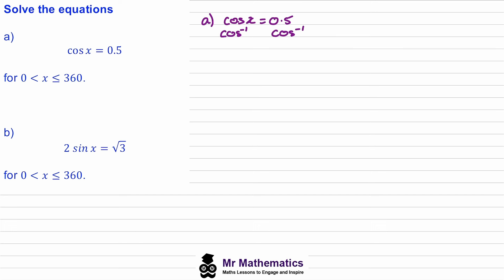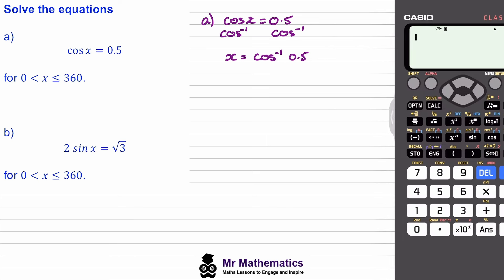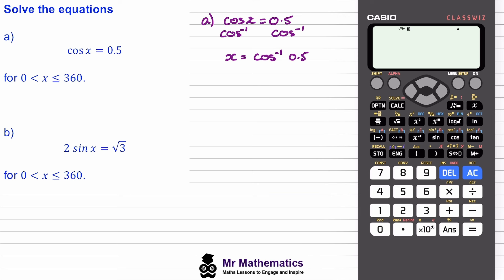These inverse operations will cancel, so what we're left with is x will equal the arc cos of 0.5. I'll show you how to work this out on a calculator. We press shift, then cos, then 0.5. We need to make sure our calculator is in degrees mode, and then we get x is equal to 60 degrees.